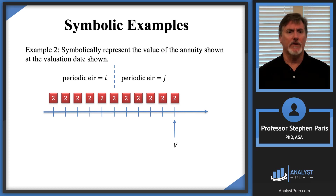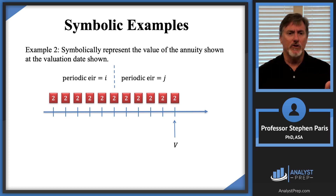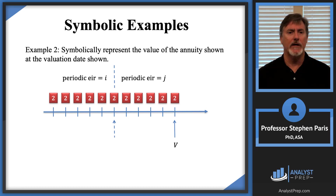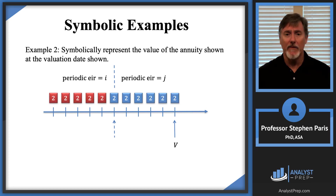Let's look at one more example. Here I need to symbolically represent the value of the annuity shown at the valuation date. I've got level payments of two throughout — 11 payments of two — but at the time of that middle payment of two, the periodic effective interest rate changes from I to J. That means I have to use that time period as an intermediate valuation date: all the twos before it use interest rate I, and all the twos after it use interest rate J. The question is what to do with that middle payment of two highlighted in blue.